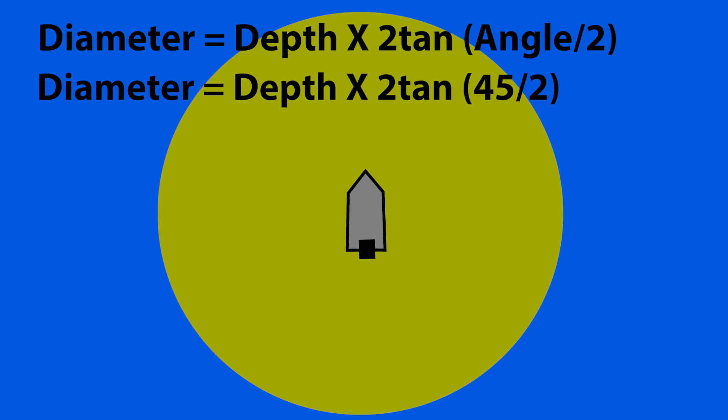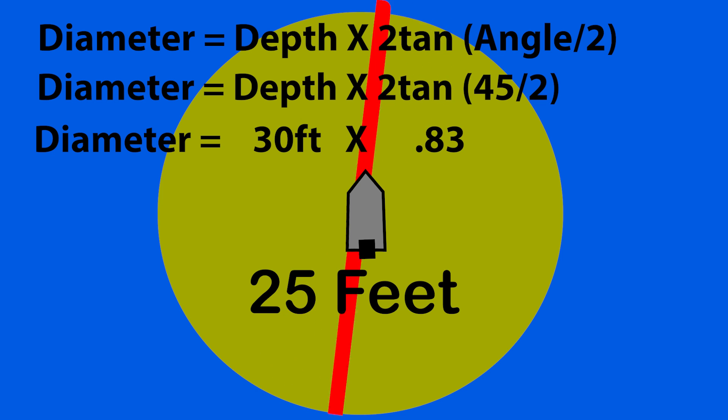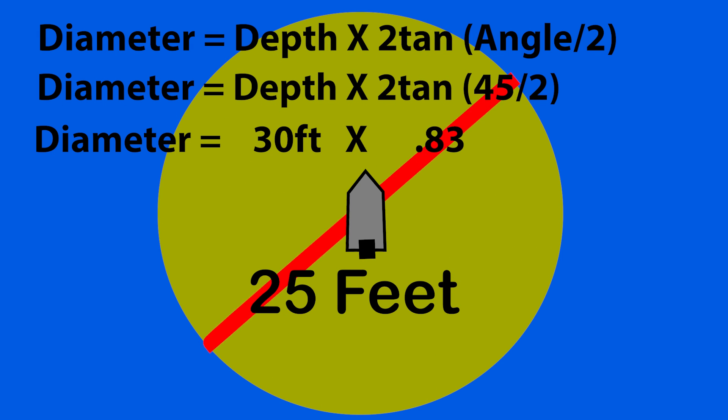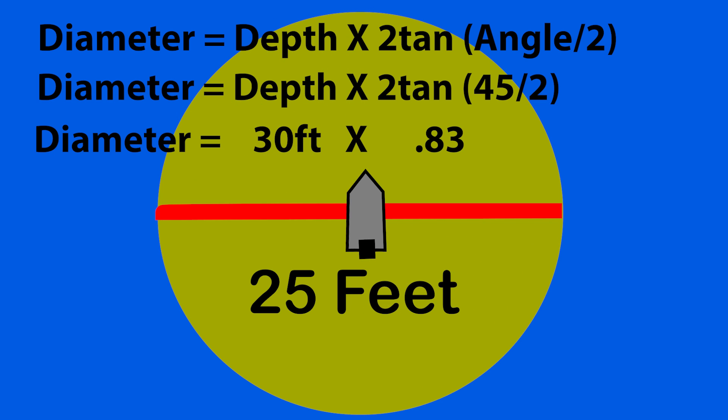In this example our cone angle will be 45 degrees since we'll be using the 77k hertz transducer frequency, and we'll pretend our boat is over 30 feet of water. 2 tangent multiplied by 45 divided by 2 gives us 0.83. When we take 30 and multiply it by 0.83, we find out our total cone diameter at 30 feet of depth will be approximately 25 feet. This means that at a depth of about 30 feet, our sonar is looking about 12.5 feet in all directions from the boat.